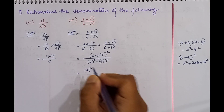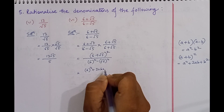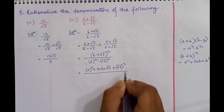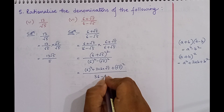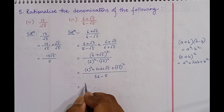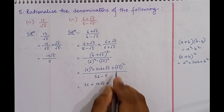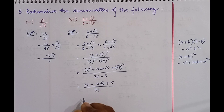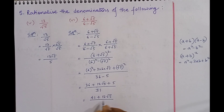So we write the numerator as 6 square plus 2 into 6 into root over 5 plus root over 5 whole square, by 6 square is 36 minus root over 5 whole square is 5. This gives 36 plus 12 root over 5 plus 5, with denominator 36 minus 5 equals 31. So the answer is 41 plus 12 root over 5 by 31.